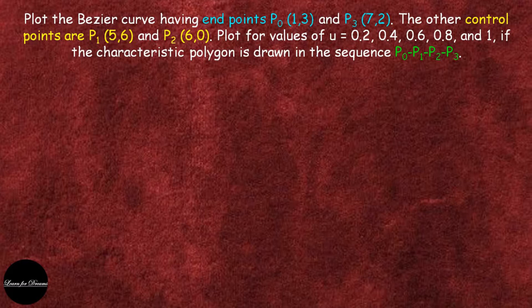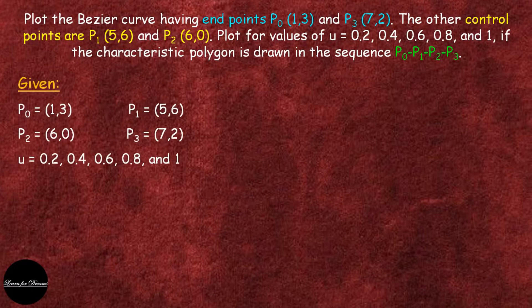The first step is noting down the given data points. In the previous video the data points were end points and control points. Now here, end points are P0 and P3, and control points are P1 and P2.